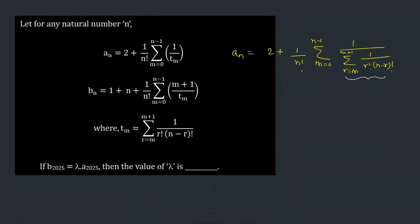Using this trick, we multiply and divide by n factorial, so this will become the binomial coefficient nCr. The n factorial cancels with the other n factorial. This series simply becomes 2 plus the summation m equal to 0 to n−1 of 1 over the resulting expression.